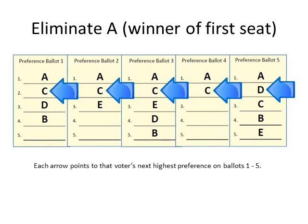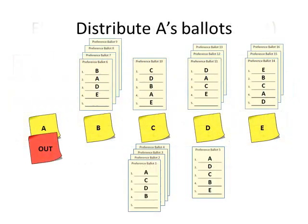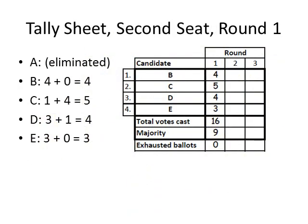Now, the winner of the first seat is treated as though he was eliminated, and the votes cast for him are distributed among the remaining candidates according to each voter's next highest preference. We can see that the next highest preference on four of the five ballots is C, and on one of them is D. The ballots are placed below the sticky notes, counted, and then added to the number of ballots received by each candidate initially. These numbers are the results of the first round.